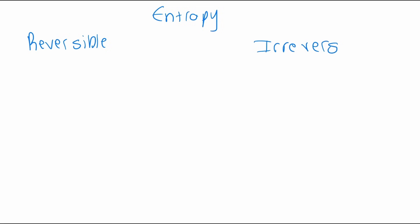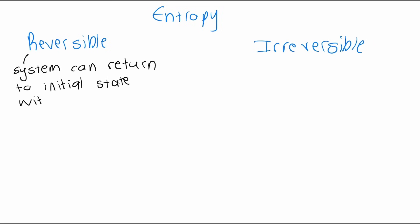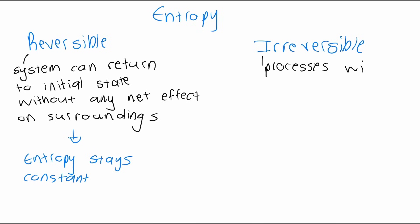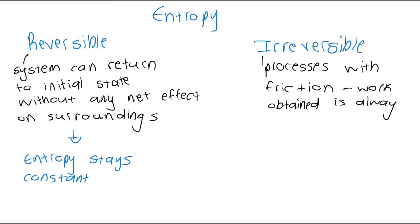Let's talk about entropy in reversible and irreversible processes. A reversible process is one in which the system can be returned to its original state without any net effect on the surroundings. In these processes, the entropy stays constant since the system is returned to its initial state. Irreversible processes are real-life processes with friction — the work obtained is always less, and in these processes, the entropy increases.